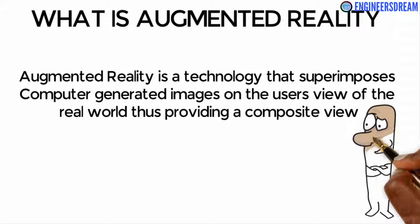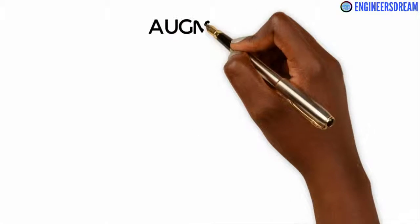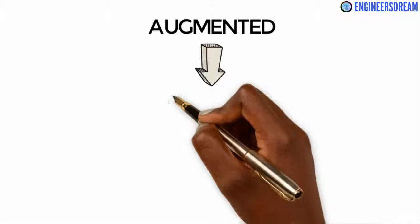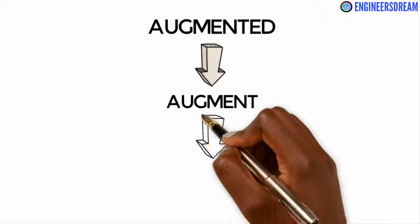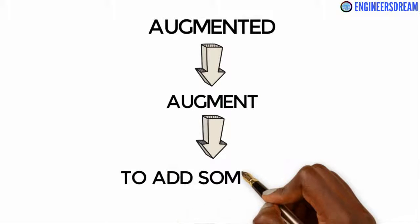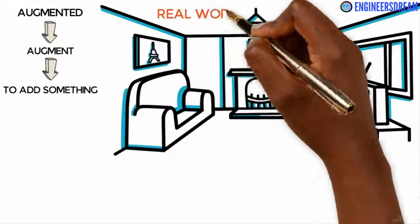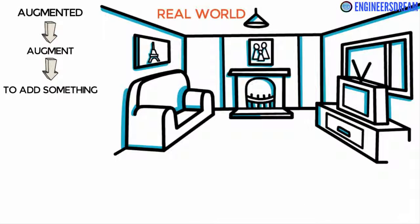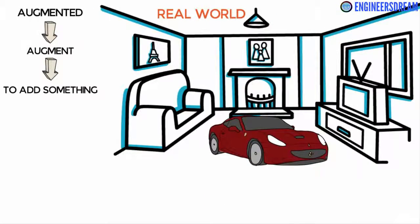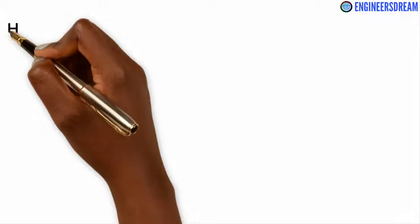That definition was a bit difficult to understand, so let me explain augmented reality or AR in simple terms. The word 'augmented' is basically originated from the word 'augment', which means to add something. So in augmented reality technology, we are augmenting something — we are adding a computer generated 2D graphic or 3D object inside the real world.